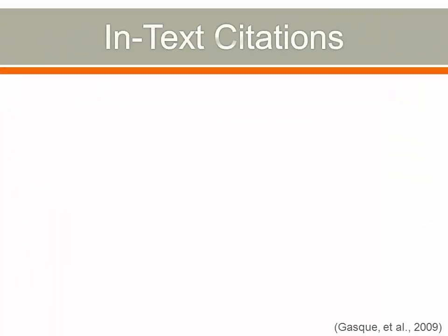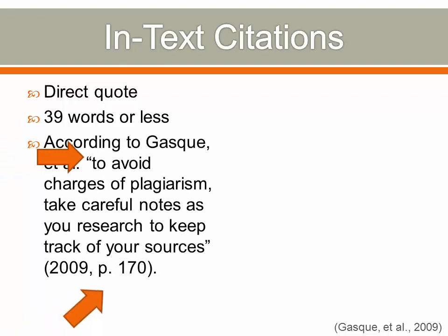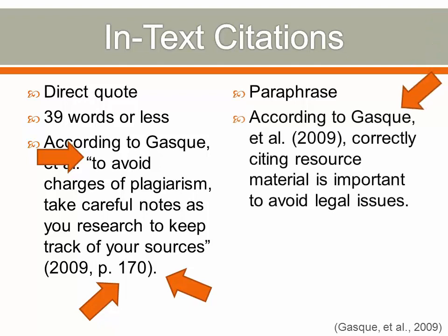An in-text citation is a citation that precedes the direct quote or paraphrase. If the quotation is 39 words or less, the direct quote requires both quotation marks and a page number, and the citation follows directly after the quotation marks. When paraphrasing, the author's name precedes the paraphrase followed by the year, with punctuation at the end of the sentence. Unlike the direct quote, paraphrasing does not have a stipulated length, and the paraphrase does not include quotation marks or a page number.